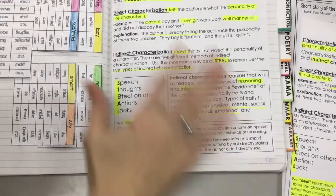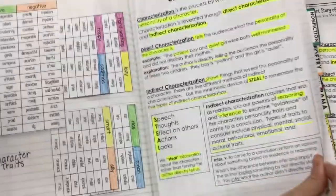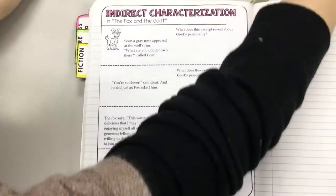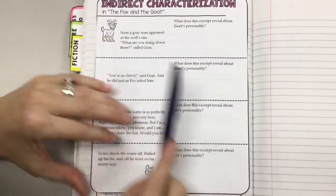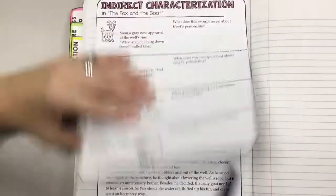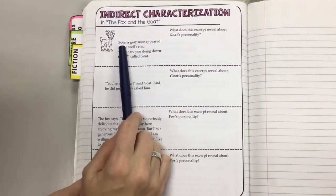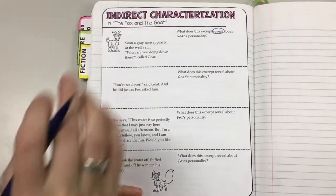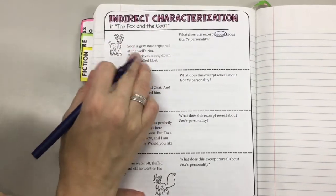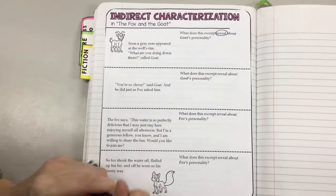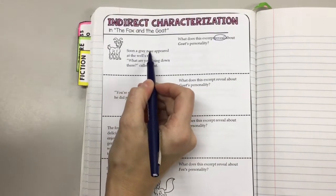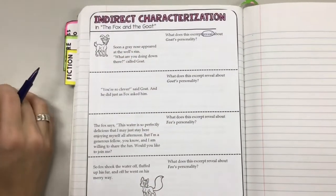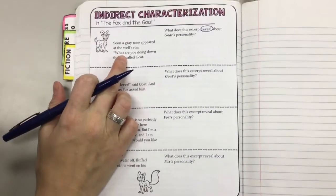We're going to try stealing some information about the goat and the fox from our fable. We're going to look at an excerpt — a direct quote from the story — and figure out what this quote reveals about the goat's personality. The author is not going to come out and directly tell us; we as the reader have to figure it out. The excerpt says: 'Soon a gray nose appeared at the well's rim. What are you doing down there? Called goat.' Now you, the reader, have to ask: what does this reveal about goat?